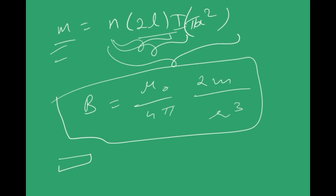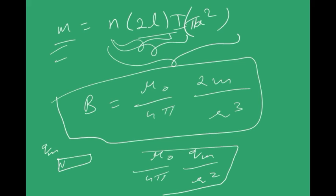Some textbooks treat the north pole as a magnetic monopole with magnetic charge q_m and write B = (μ₀/4π) · q_m/r². However, this approach is not correct because magnetic monopoles do not exist, so we should not rely on it.